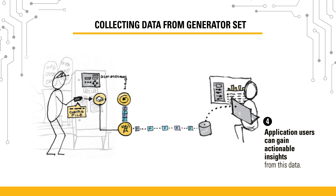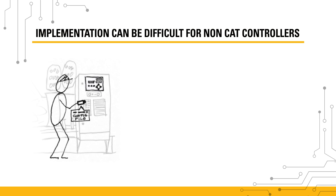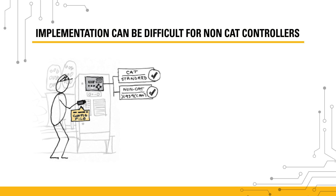Let's take a closer look at step two of this process, where the config file takes data from the controller and translates it into parameters and faults that the remote monitoring application can understand. This is a very important step. Without the config file, it's not possible to get asset data from the controller. And without a config file that's coded to work with the controller, the data may not be usable.